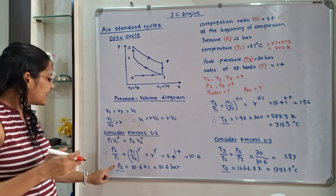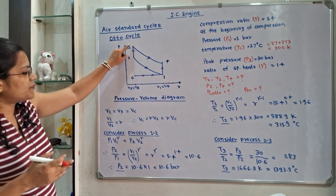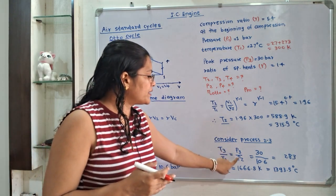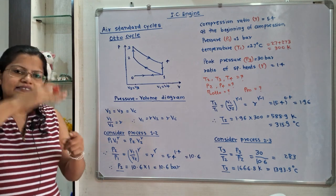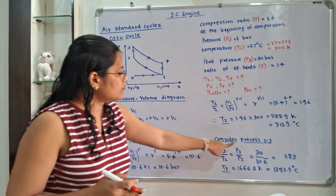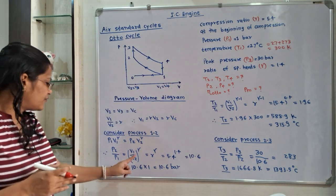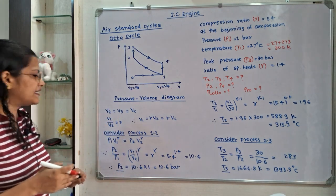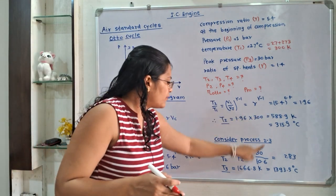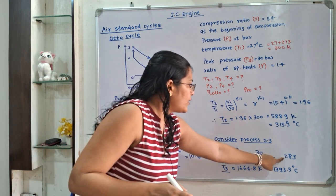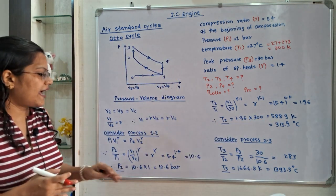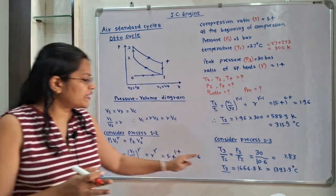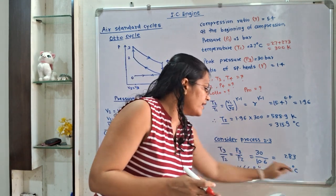For process 2 to 3 (constant volume heat addition), the relation between temperature and pressure is T3/T2 = P3/P2. With P3 = 30 bar and P2 = 10.6 bar, the ratio is 2.83. Taking T2 in Kelvin as 588.9, we get T3 = 2.83 × 588.9 = 1666.5 Kelvin, which converts to 1393.5 degrees Celsius.